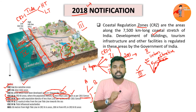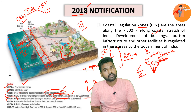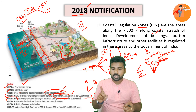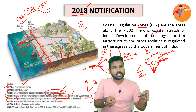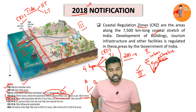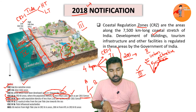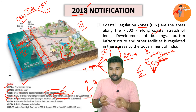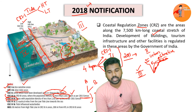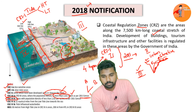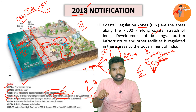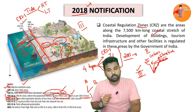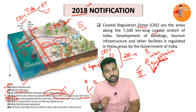The key change relates to the No Development Zone (NDZ). In CRZ3 Category B — where population density is lower — the no development zone remains up to 200 metres from the high tide line. However, in CRZ3 Category A — where population density is more than 2,161 persons per square kilometre — the no development zone has been reduced to only 50 metres from the high tide line.